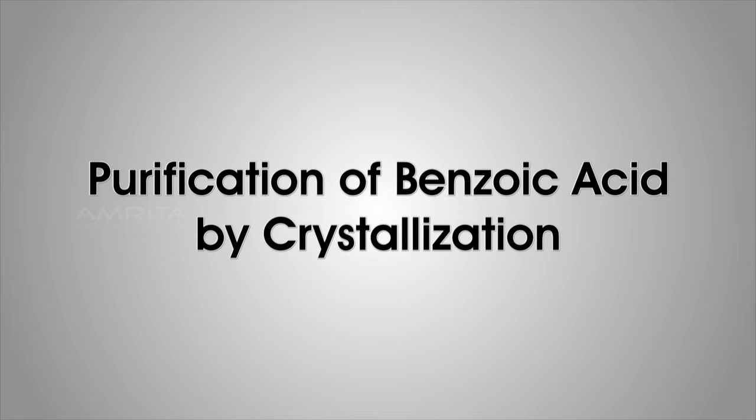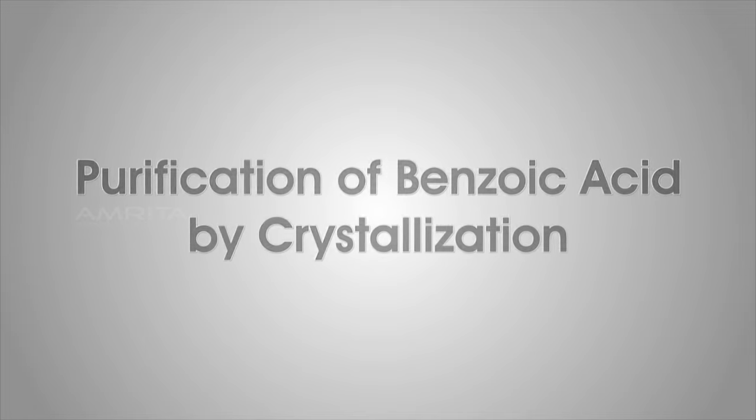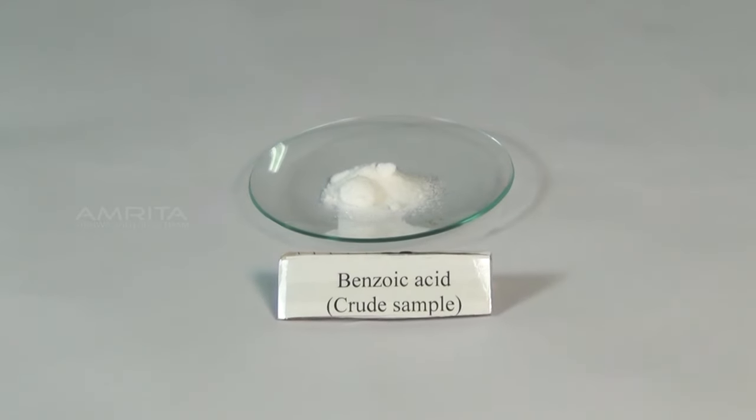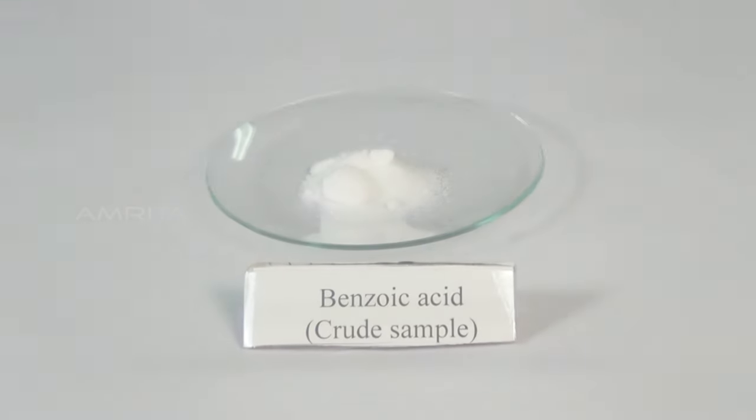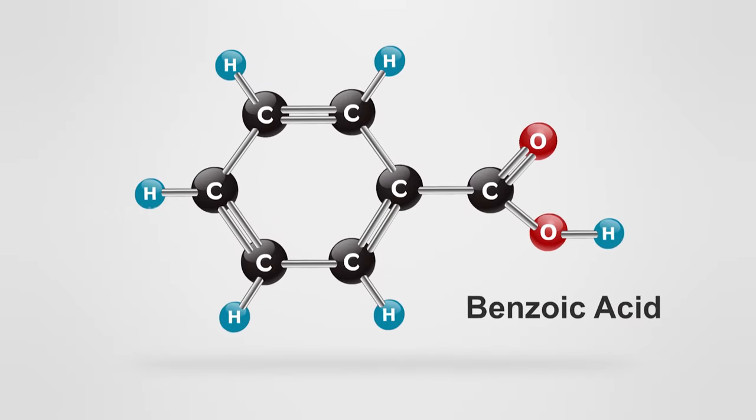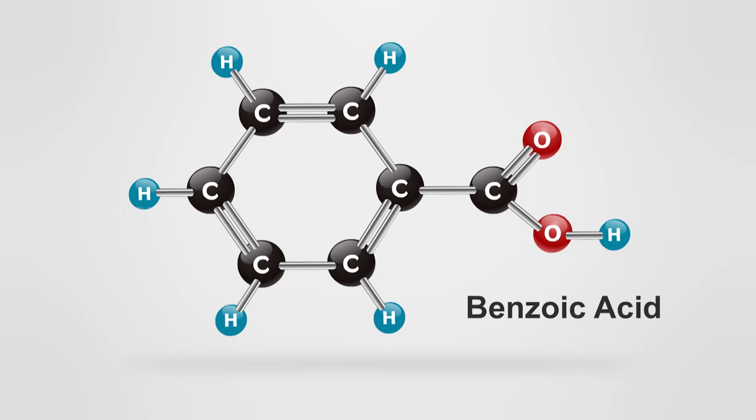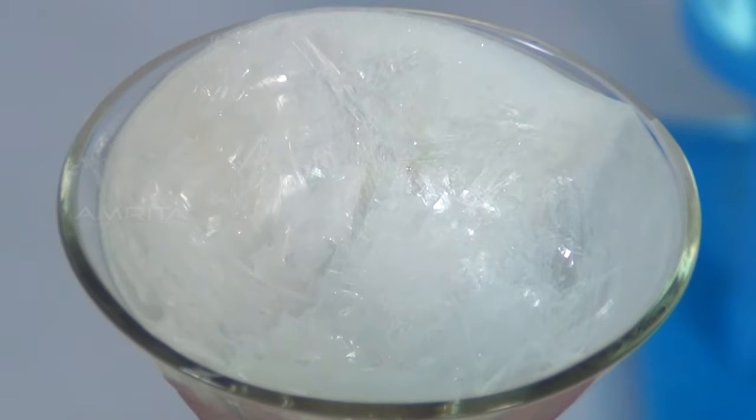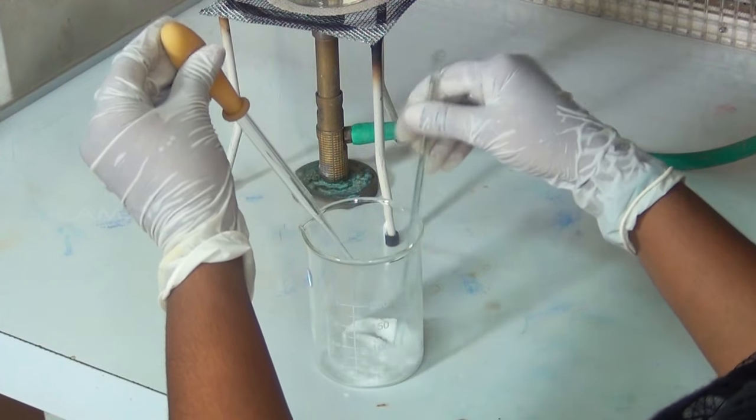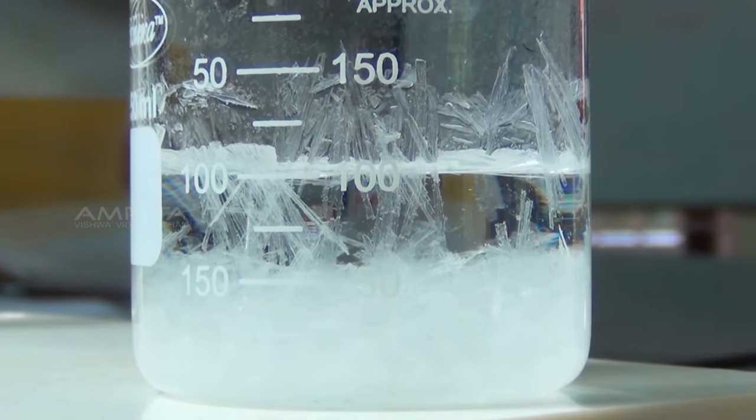Purification of Benzoic Acid by Crystallization. Benzoic acid is a colorless crystalline solid and it is an aromatic carboxylic acid. The pure crystals of benzoic acid can be prepared from an impure sample by the process called crystallization.